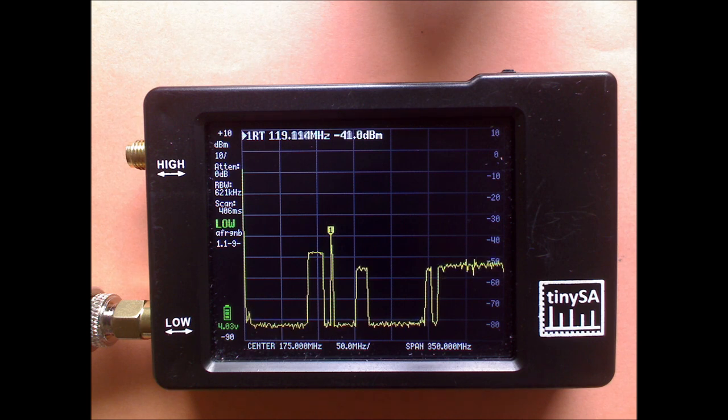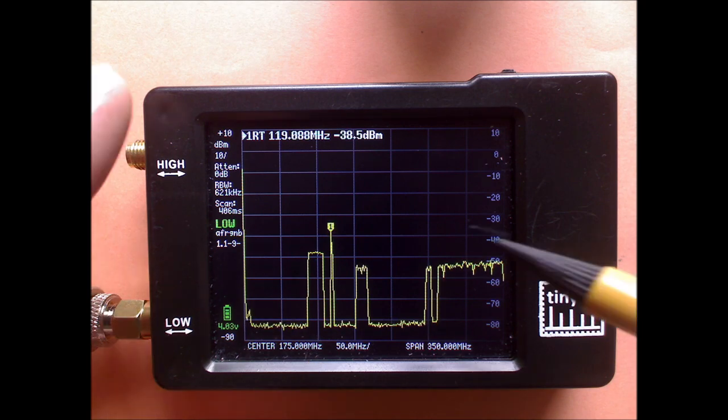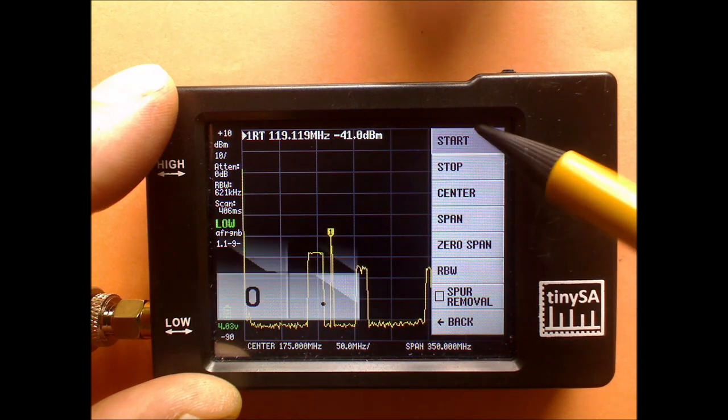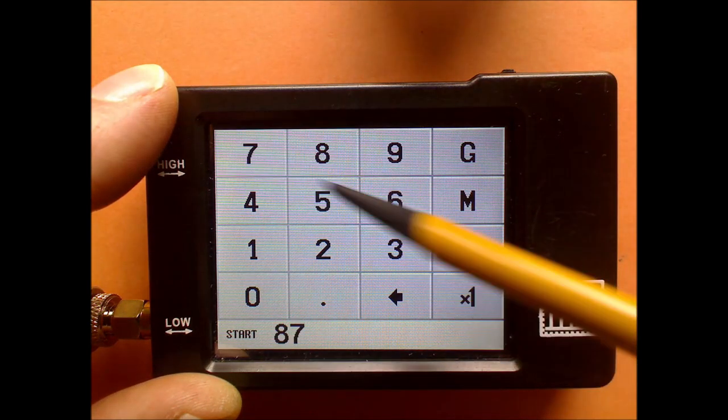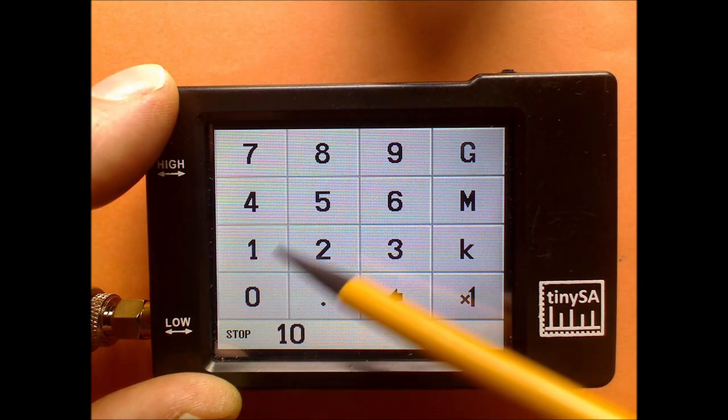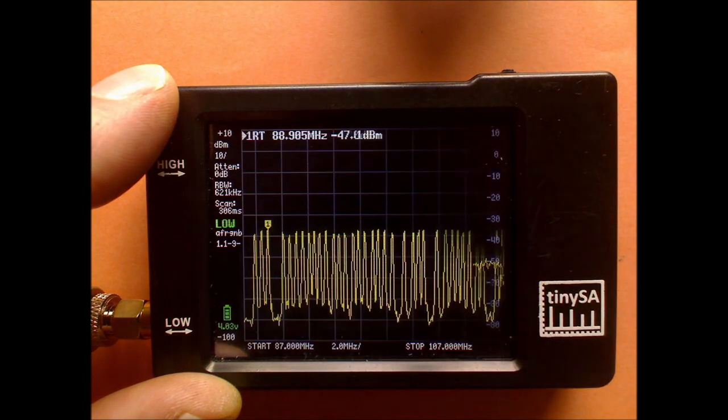In the next step we will first zoom in into the FM network. So we're going to set the start frequency to 87 megahertz and the stop frequency to 107 megahertz.